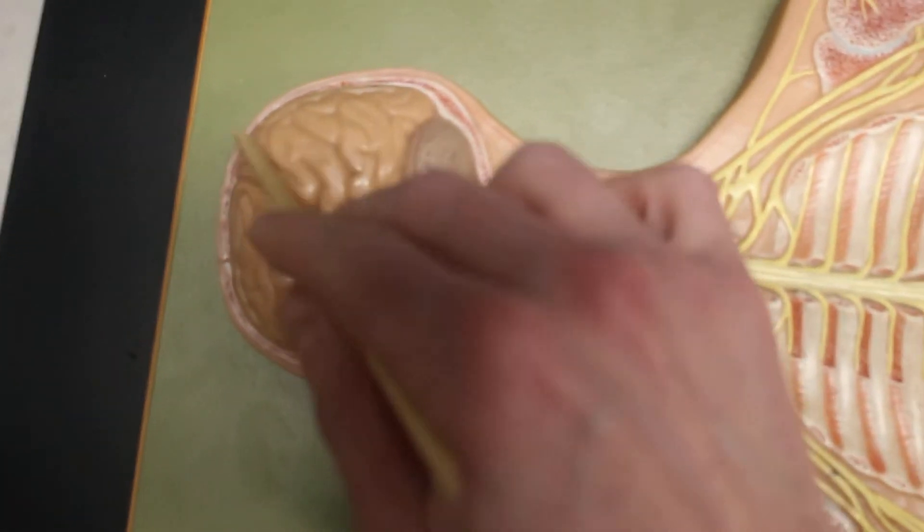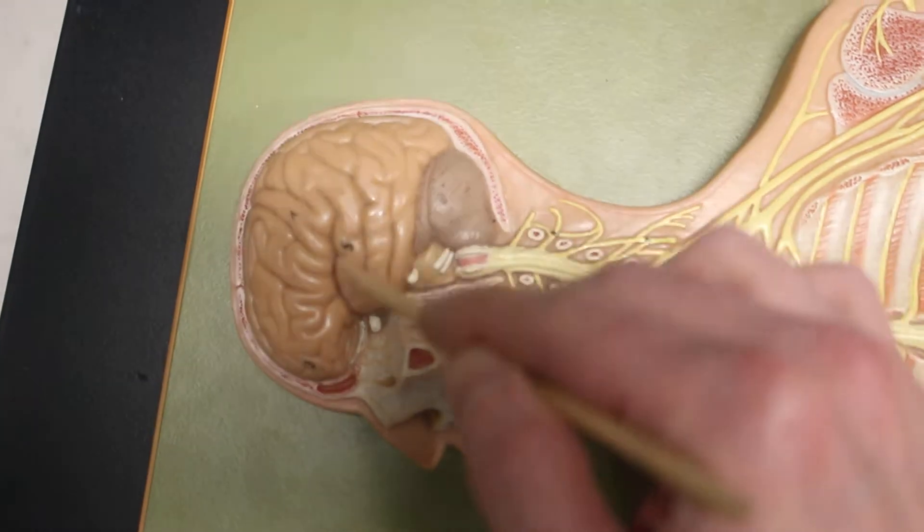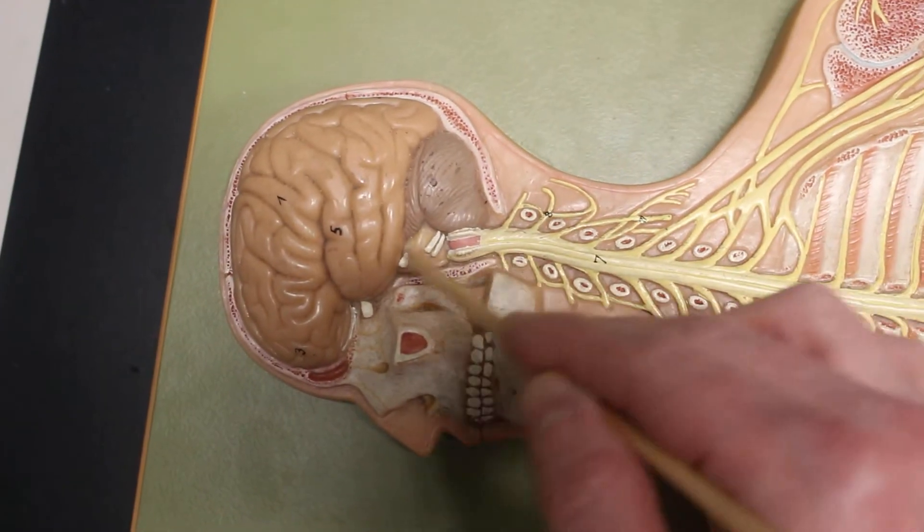The cerebrum has a frontal lobe, parietal lobe, occipital lobe, temporal lobe, cerebellum, brainstem.